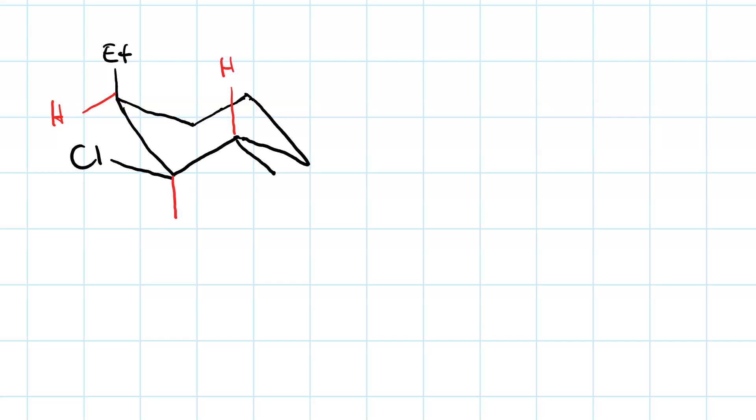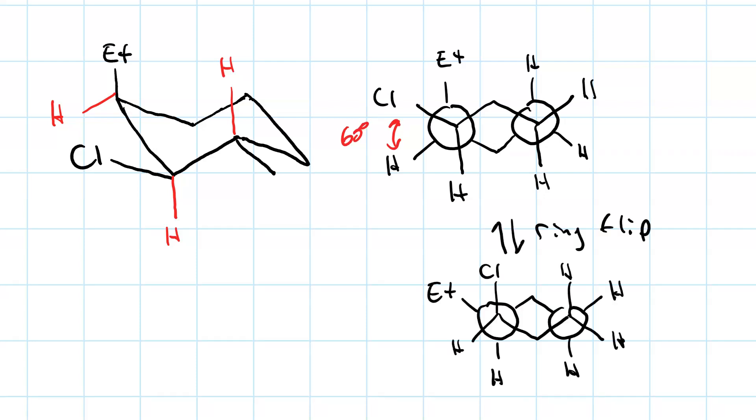Now the proton on the alpha carbon is pointing down, which means the leaving group is pointing up. So we can't have a 180-degree torsion angle with this beta proton. It's got to be the one that's pointing down. As you can see, right now our torsion angle is 60 degrees. So we have to do a ring flip. And having done the ring flip, we can see the 180-degree torsion angle.